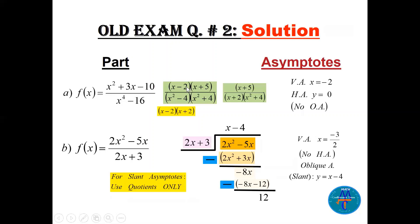For part (a) and part (b), factor the numerator and denominator. For part (a), factoring gives (x - 2)(x + 5) on top. For part (b), we have x² - 4 over x² + 4. We can factor the difference of two squares, then cancel (x - 2) — that's a missing point. The final simplified function is (x + 5) / [(x + 2)(x² + 4)], and (x² + 4) cannot equal 0.